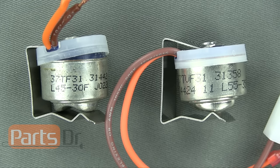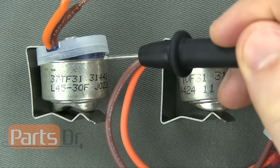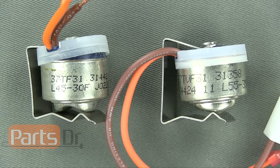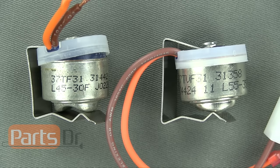The thermostat on the left is a bad defrost thermostat, and you can see how the top is raised up and some of the blue color from the inside is showing. The thermostat on the right is a good thermostat, and the top is not raised up at all.